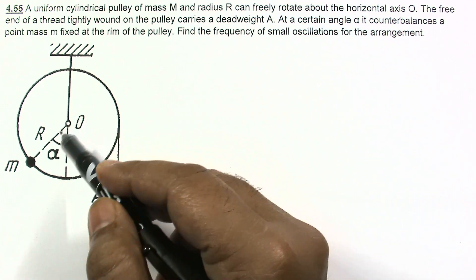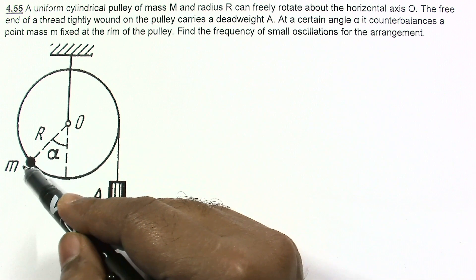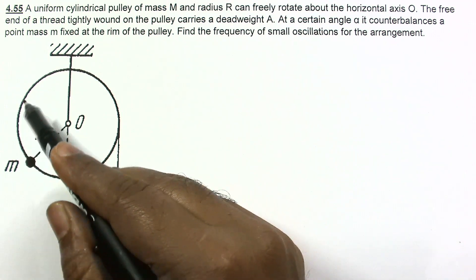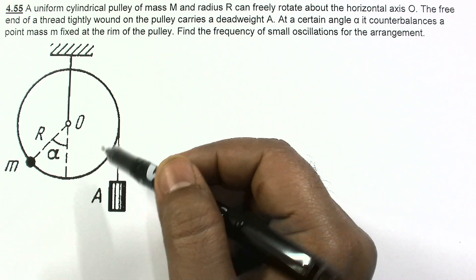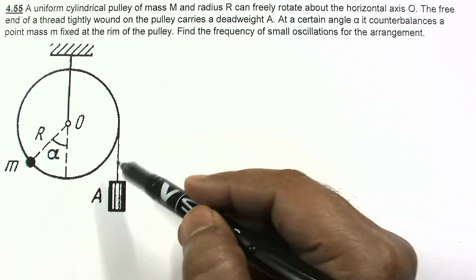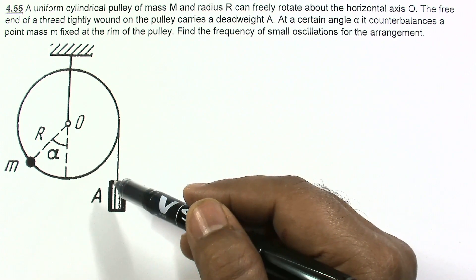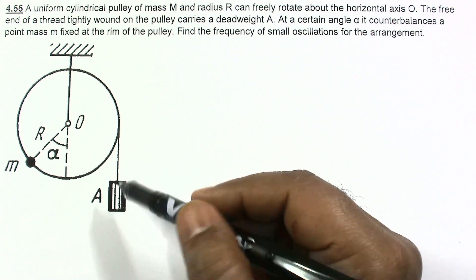It is given that at angle alpha, when the mass is here, the system is in equilibrium. Equilibrium means no acceleration — no linear acceleration and no angular acceleration.